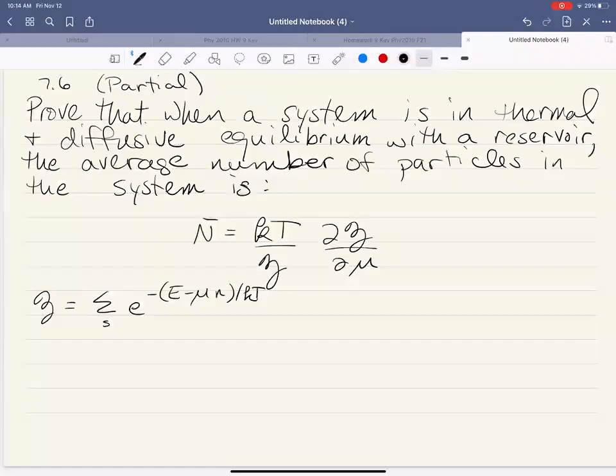Hi, everybody. In today's lecture, I'm going to prove a relationship that we're going to use later in our derivation of the distribution function for bosons and fermions. And this comes from Schroeder's Thermal Physics, Chapter 7, and this is part of Problem 6 in that chapter.